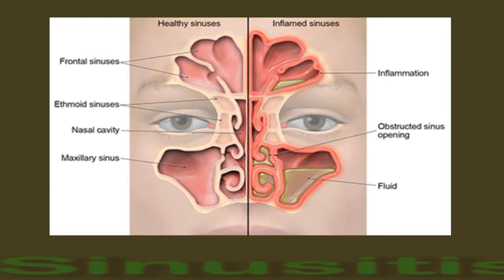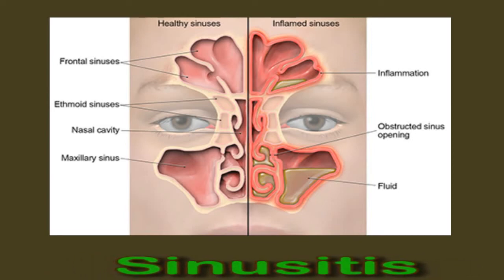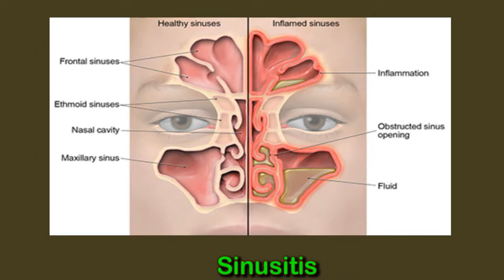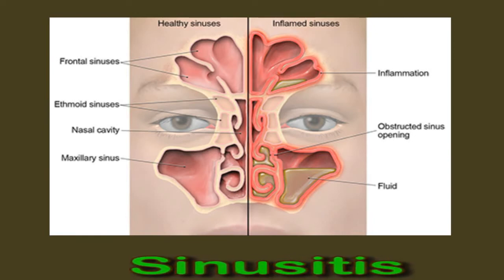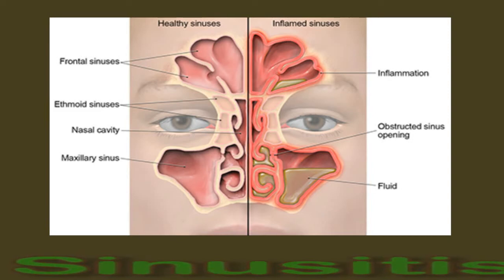Sinusitis is inflammation of the sinuses and it may stem from an infection in another part of the respiratory system. The inflammation can lead to increased mucus production and blocked sinuses due to difficulty draining. Some symptoms of sinusitis are pain around the eyes, cheeks or forehead, sinus pressure and tenderness, nasal discharge, a blocked nose, a reduced sense of smell, a fever, and bad breath. A person should contact a doctor if their symptoms last longer than 10 days without improvement.